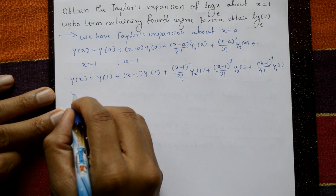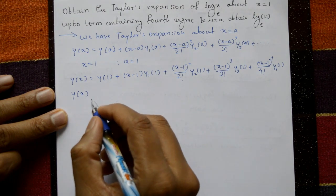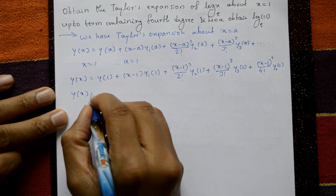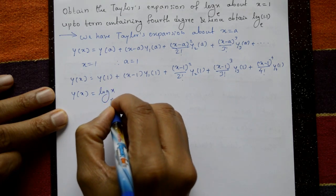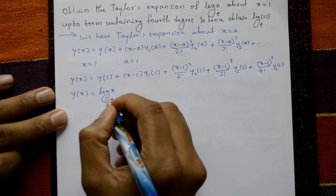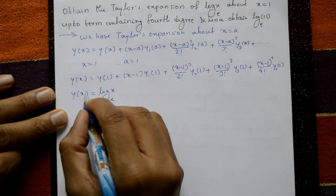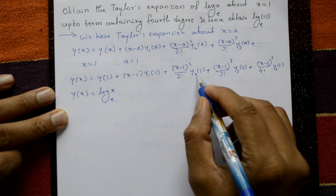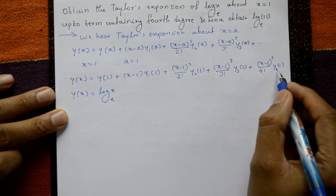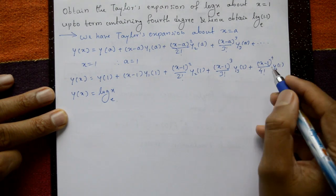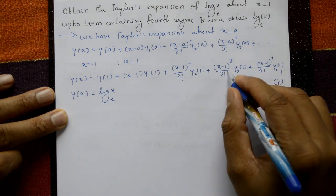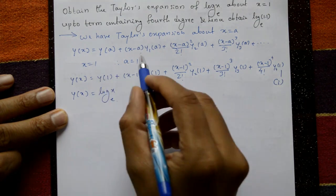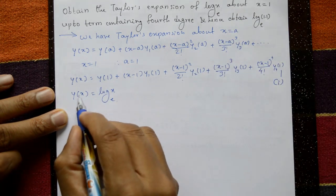The given function is y(x) = log x (base e). We need to find y(1), y₁(1), y₂(1), y₃(1), and y₄(1), then substitute into equation number one. Take x = 1.